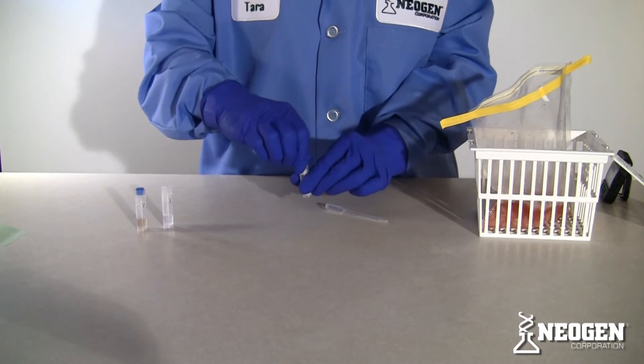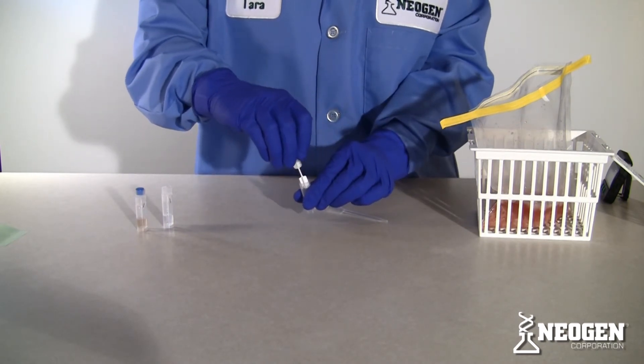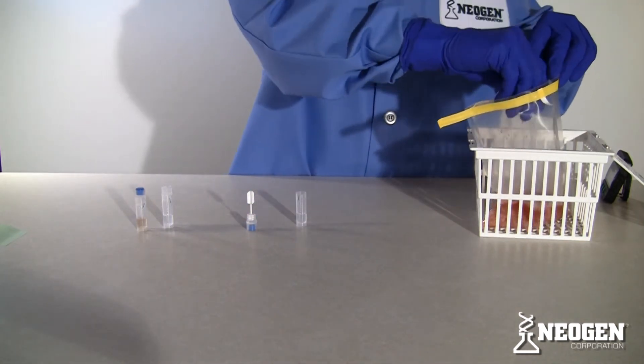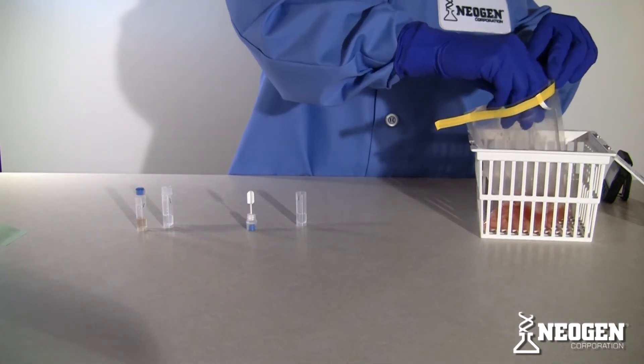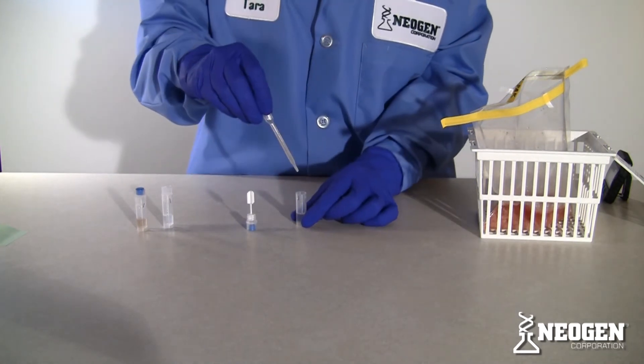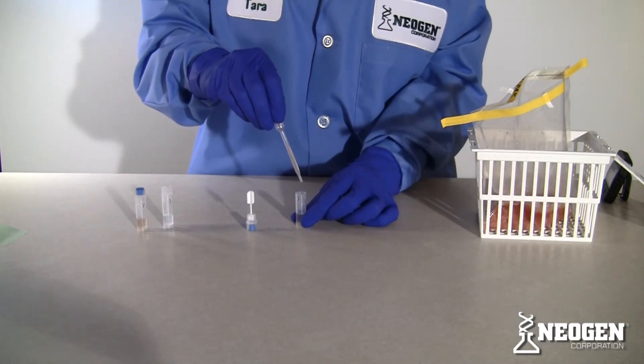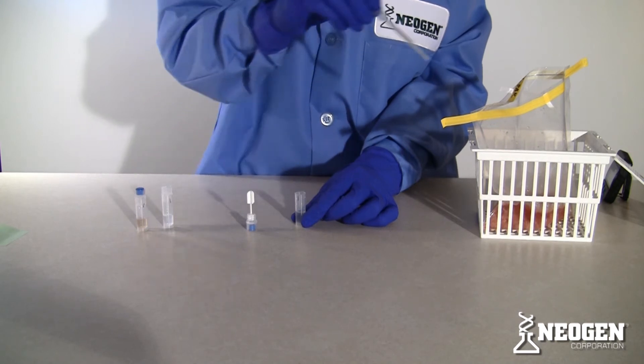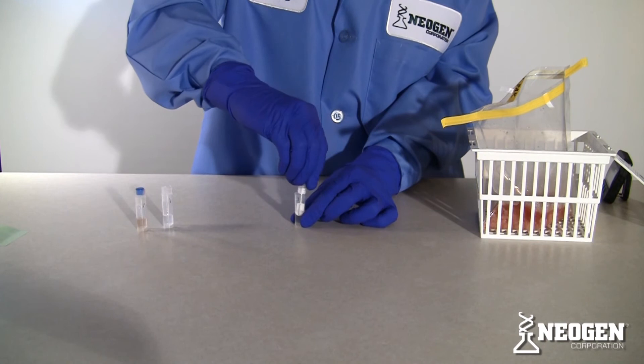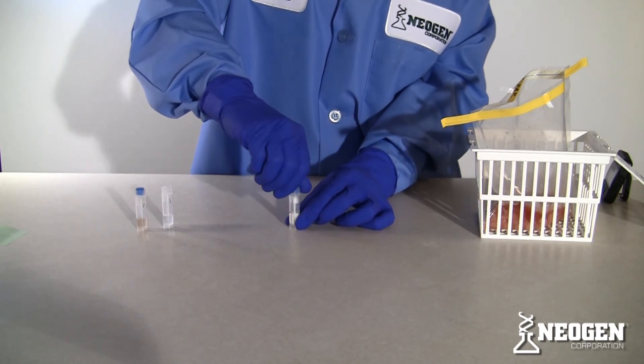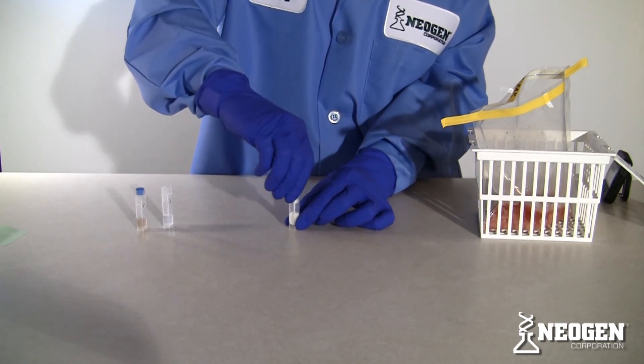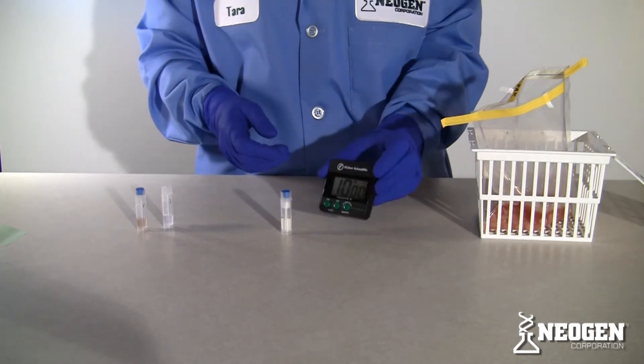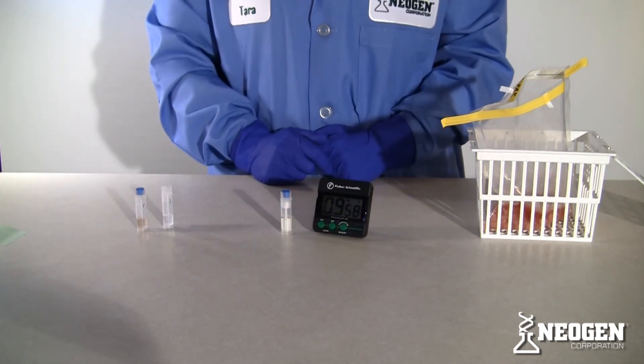Unscrew the cap of the first immunosticks tube. Using a clean disposable pipette, add six drops of sample extract to the liquid in the tube. Replace paddle and mix contents by screwing and unscrewing the tube's cap three or four times. Tighten cap and allow the tube to stand for ten minutes. Do not invert the tubes at any time.